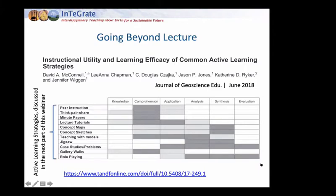A recent paper by David McConnell's group, published in the Journal of Science Education, is called 'Instructional Utility and Learning Efficacy of Common Active Learning Strategies.' The table shows different types of active learning strategies — think-pair-share, lecture tutorials, jigsaws — mapped against Bloom's knowledge taxonomy and what active learning can help achieve. For example, using a jigsaw can help students analyze information and provide a synthesis.